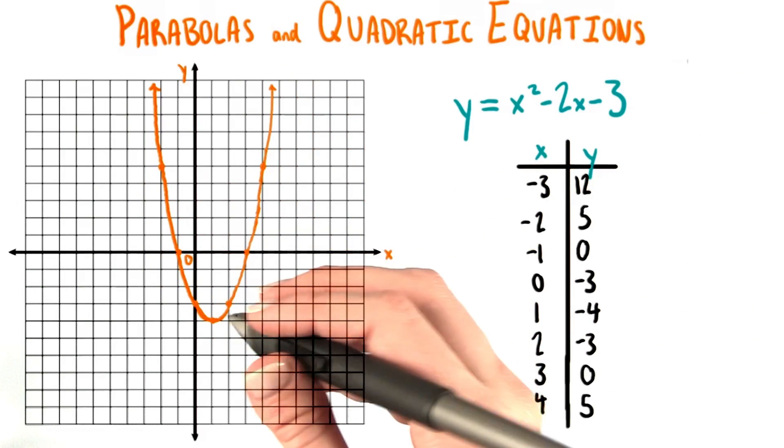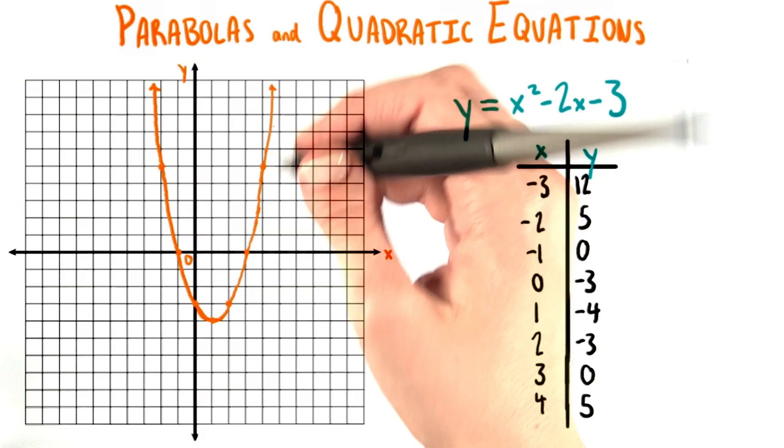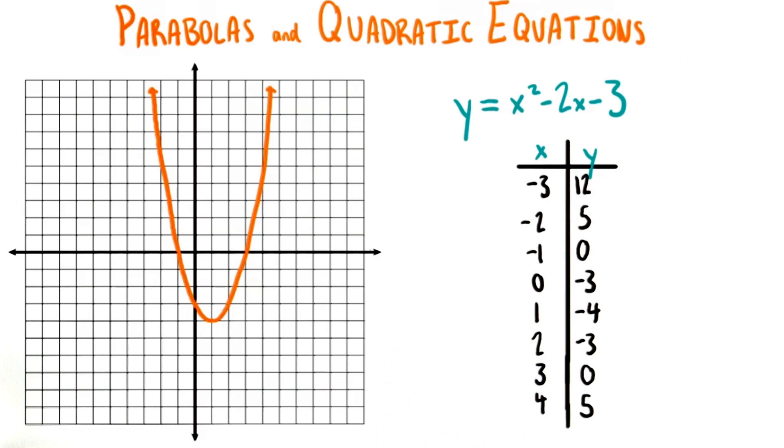And then once I have this sort of rough sketch, I can go over it to make it smoother. And voila, we have a parabola.